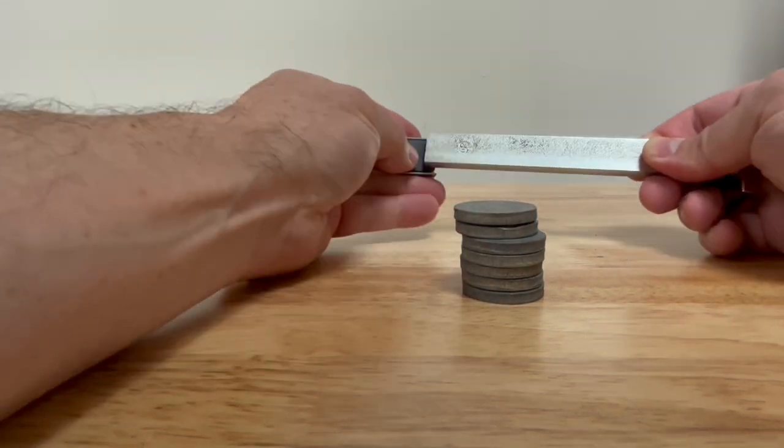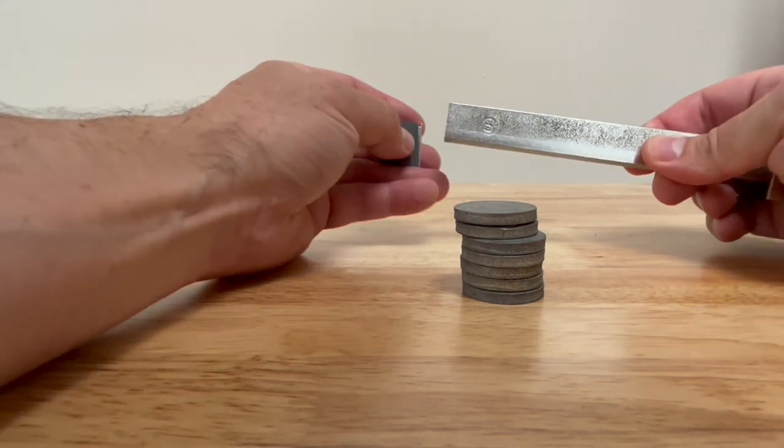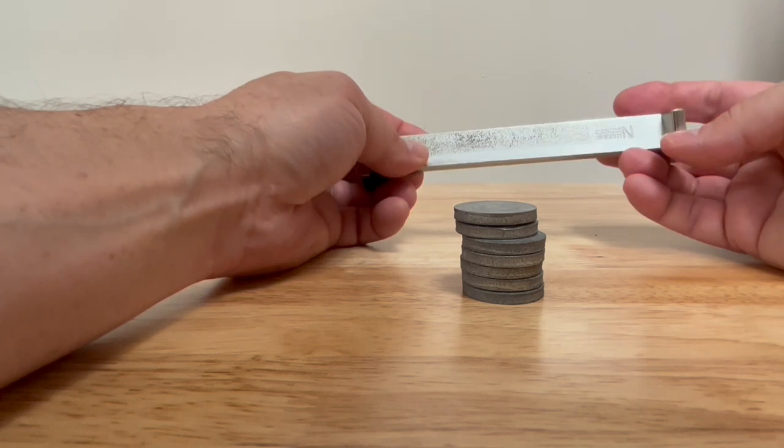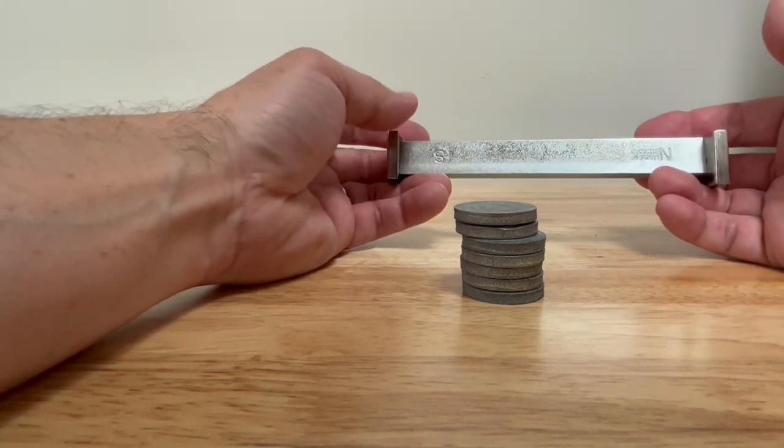Like I said, a neodymium magnet would be faster. So I'm thinking some way to either make or purchase a remagnetizer might be the best way to go with these Alnico magnets.